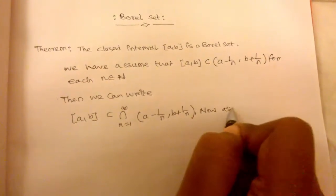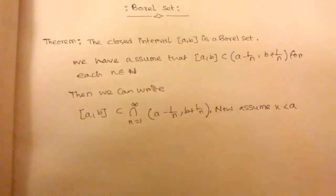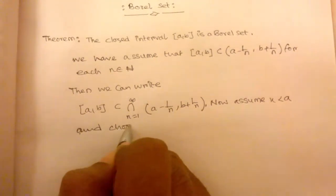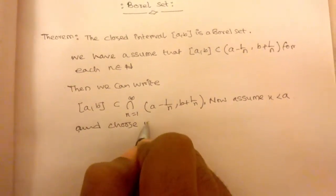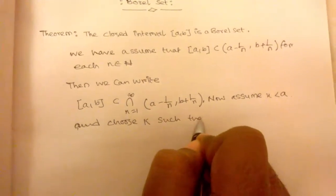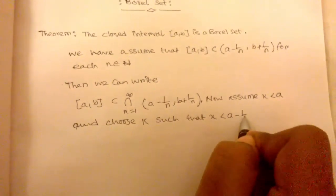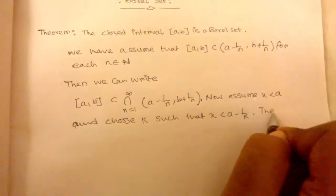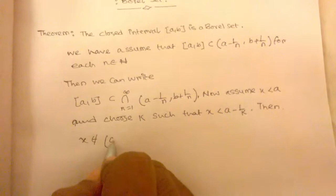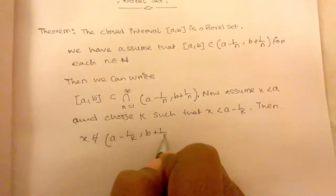Now assume x less than a and choose k such that x less than a minus 1/k. Then x does not belong to (a - 1/k, b + 1/k).